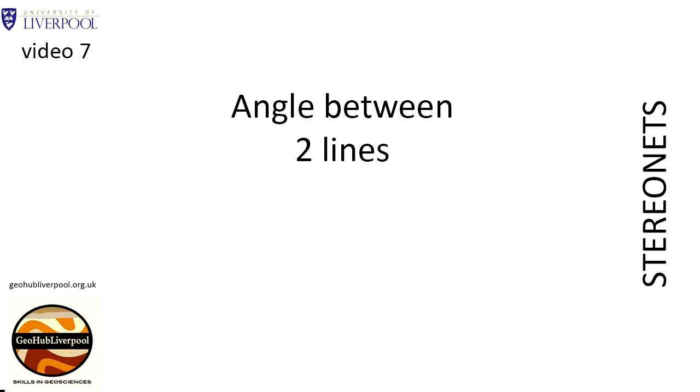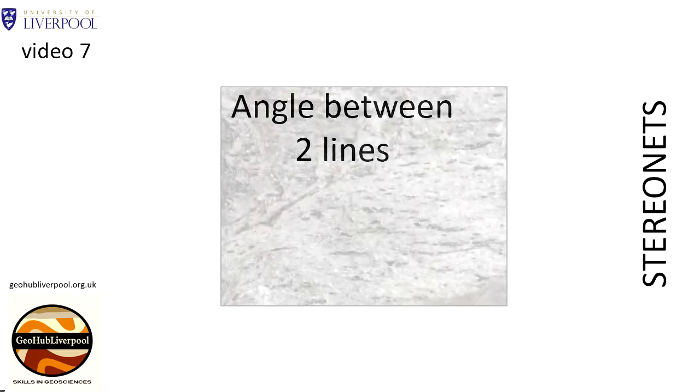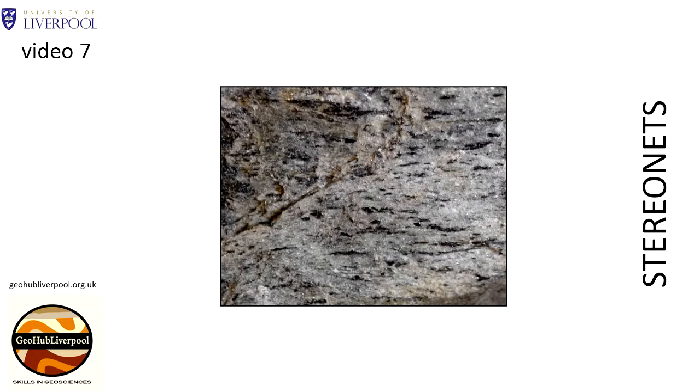In structural geology, it's often useful to work out the angle between two lines on a plane. For example, you could have two different mineral lineations in a polydeformed metamorphic rock and want to know the angle between these lineations. This clip shows how to plot two lines on a stereogram and determine the angle between them.